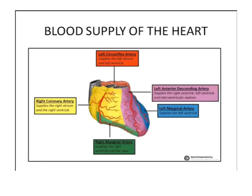As we know, the aortic valve has three cusps: right coronary cusp, left coronary cusp, and non-coronary cusp. From the right and left coronary cusps arise the coronary arteries — the right coronary artery and the left coronary artery — which supply the heart. The right coronary artery supplies the right atrium and the right ventricle, as seen in this figure.